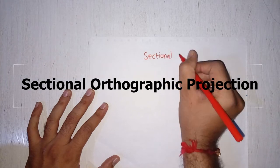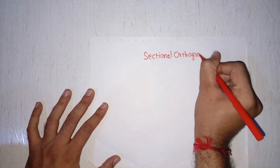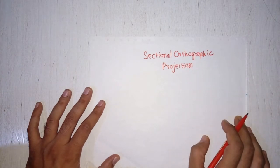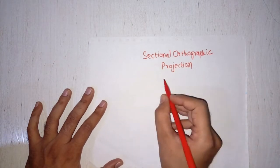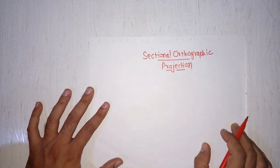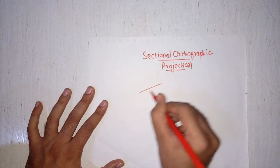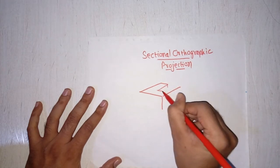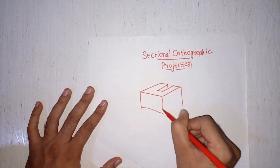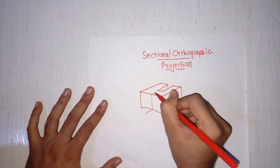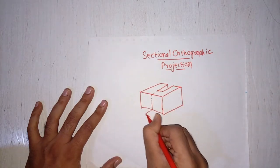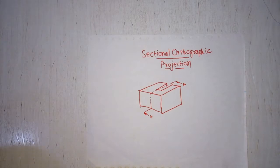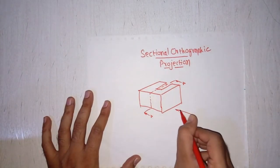Today let's see sectional orthographic projection and solve some problems. Sectional orthographic projection is orthographic projection by considering the section of the given object. For example, if I have an object and I am cutting it along a line by a cutting plane — along line A-A — I need to draw the orthographic projections.